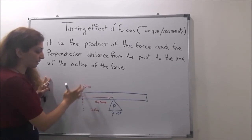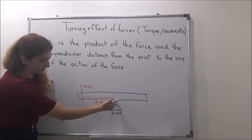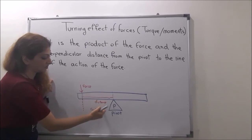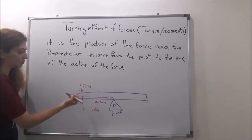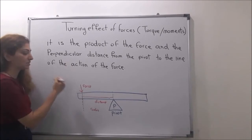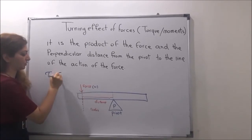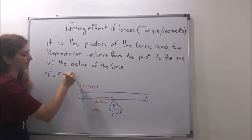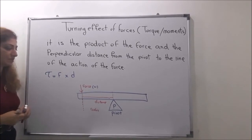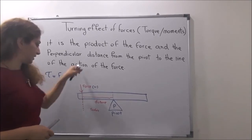The force is applied at a point, and the perpendicular distance between the pivot and the line of action of the force is called the radial or simply the distance. To measure the amount of rotation — the moment or torque — we write: T equals force (in Newtons) times the distance D. You can calculate the moment or torque by placing values into this formula.